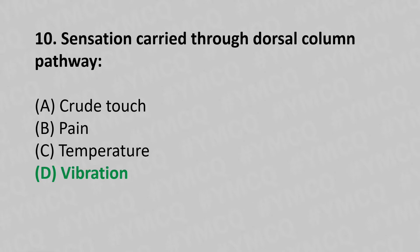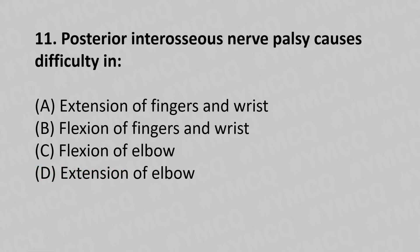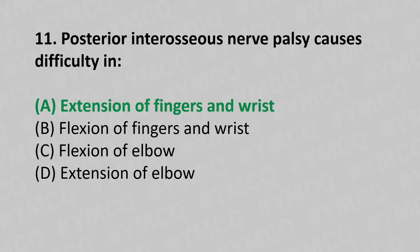Moving to our eleventh question. Posterior interosseous nerve paralysis causes difficulty in: Option A, extension of the fingers and the wrist. Option B, flexion of the fingers and the wrist. Option C, flexion of the elbow. Option D, extension of the elbow. And the answer is Option A, extension of the fingers and the wrist.